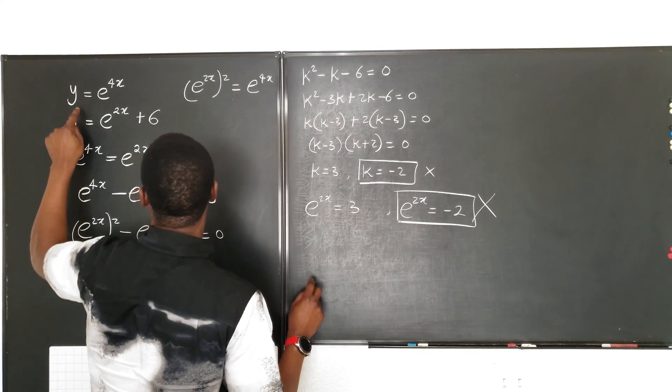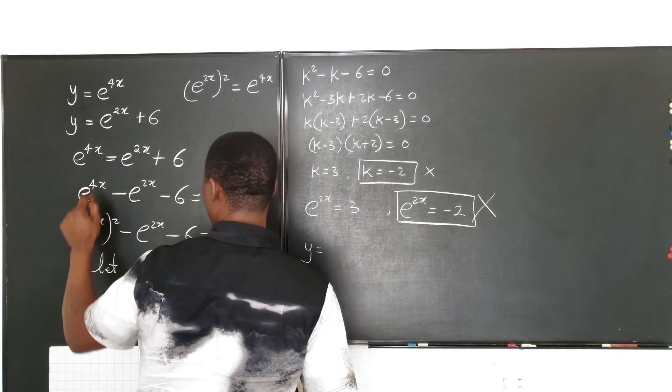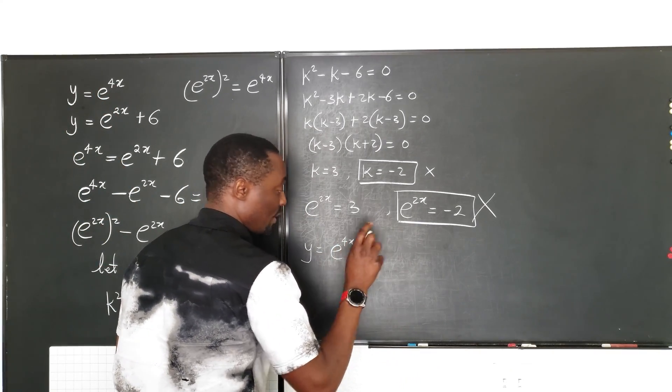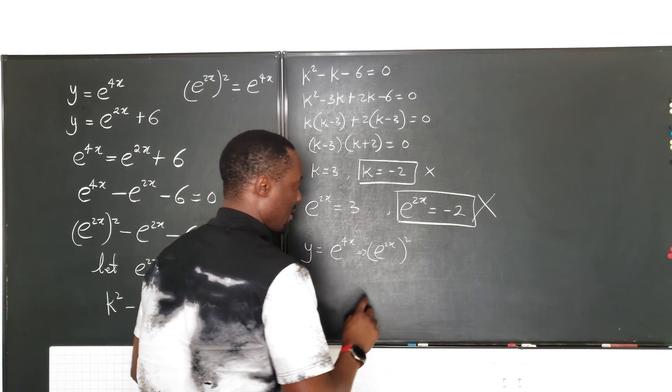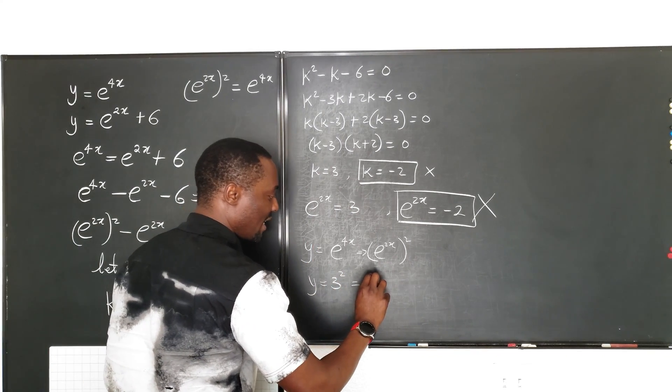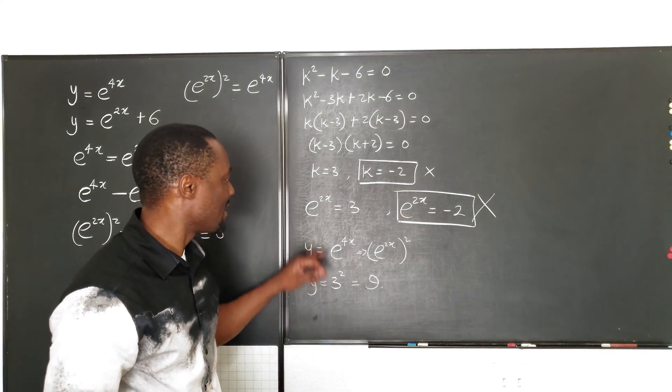Let's get y. Remember y is going to be y equals e to the 4x, which we said is the same thing as e to the 2x squared. And we know e to the 2x from here is 3, so we can say y is 3 squared, which means y is 9. So we got our y.